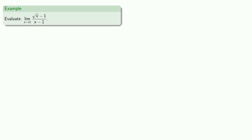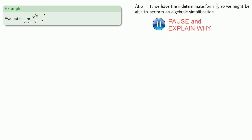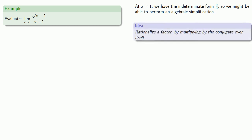How about the limit of a function involving a square root? So, again, we might just try to substitute in the value x equals one. Except if we do so, we find we have an indeterminate form zero over zero. So, we might be able to perform an algebraic simplification. Here, since we have a square root, one idea might be to rationalize one of the factors by multiplying by the conjugate over itself.